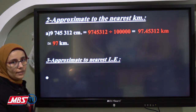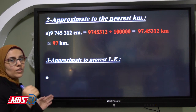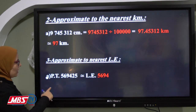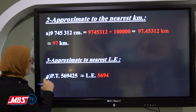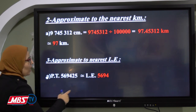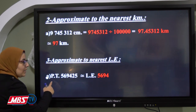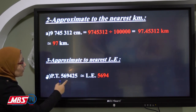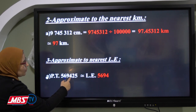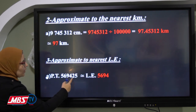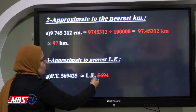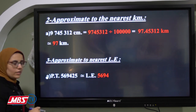The next example: approximate to the nearest pound. Approximating to the nearest pound means approximate to the nearest unit. We have 569,425 piastres. To convert piastres to Egyptian pounds, divide by 100. We put the decimal point between the 4 and 2, giving 5694.25. In the tenth we have 2, which is poor, so we give nothing to the units digit 4. The approximation is 5694 pounds.